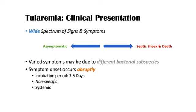Here is the clinical presentation of this disease. It has a wide spectrum of signs and symptoms, ranging from asymptomatic to septic shock and death. Varied symptoms may be due to different bacterial subspecies. Symptom onset occurs abruptly, with an incubation period of 3 to 5 days. Non-specific systemic symptoms include fever, chills, malaise, and fatigue.